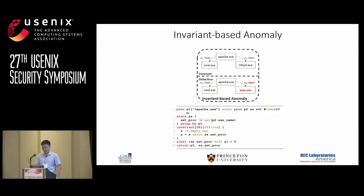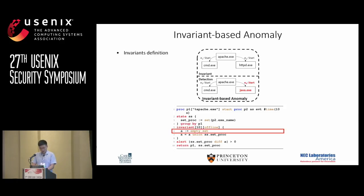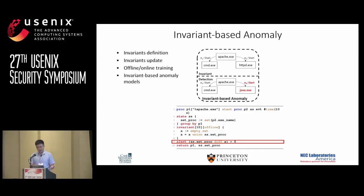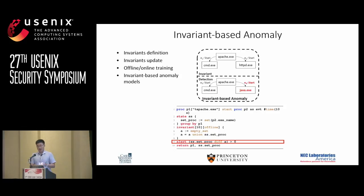We further extend the stateful computation syntax to support invariant-based anomalies. The idea is to enable the specification of violations for system invariants. We have an invariant block after the state block, in which we define an invariant as a set of child processes of the Apache process. We train the invariant for 10 windows, then check further windows for processes not included in the invariant — namely, invariant violations. Using this query, we can check if Apache starts some unexpected child process, such as bash, which is the bash shell command injection attack included in our case study.